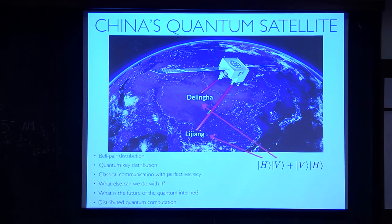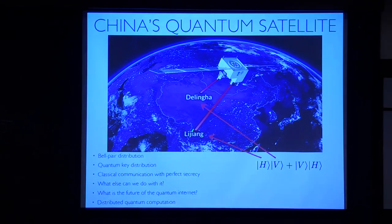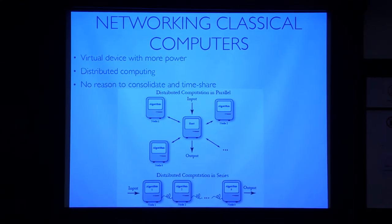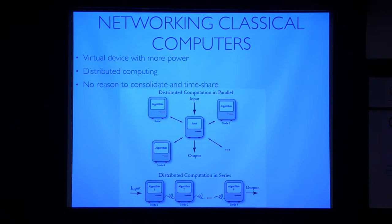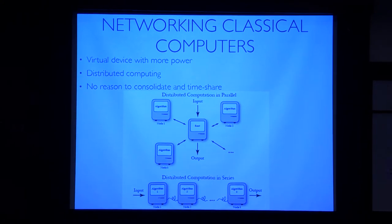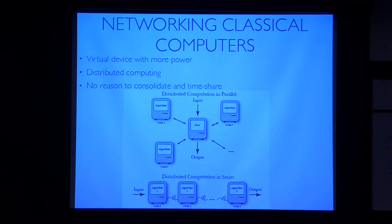So let's think about classical computer networks. It's very common for people to take a large number of classical computers and network them together into a cluster to make a more powerful computer. And you can go to Amazon and license out a certain number of CPUs for a certain amount of time for a certain amount of money, and it'll process things in series or in parallel, and so you get distributed computation.